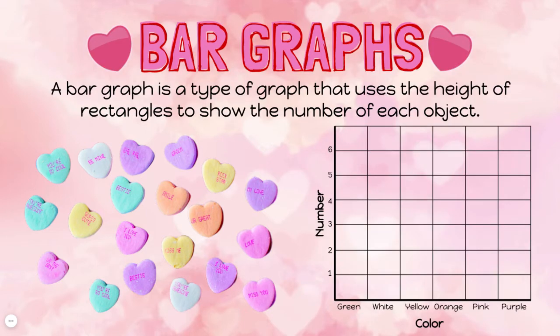A bar graph is a type of graph that uses the height of rectangles to show the number of each object. So this time I have a graph set up. Along the bottom I have the different colors of candy hearts, and along the left side I have the number. I'm going to use rectangular bars to show how many of each color heart I have. I still have four green candy hearts, so my bar for green is going to reach up to the line labeled four.